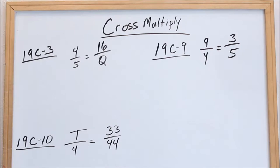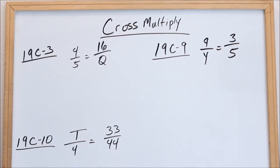Today, we're going to use cross multiplication to solve for the unknown. In the book, they're going to show you three different ways you can do these problems. I'm only going to show you by way of cross multiplication because, in my opinion, that's the quickest and that's the easiest.